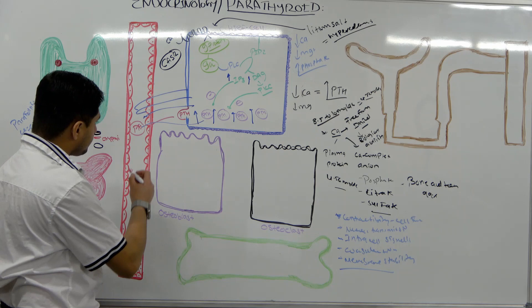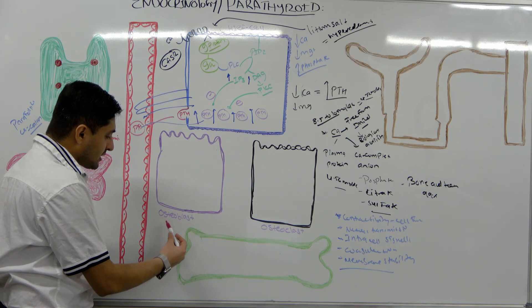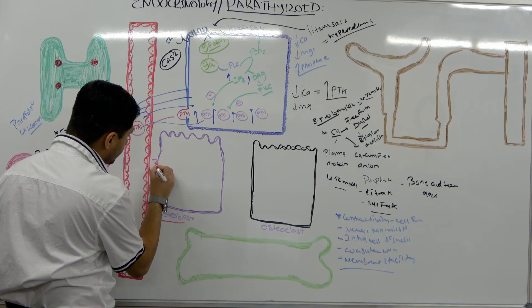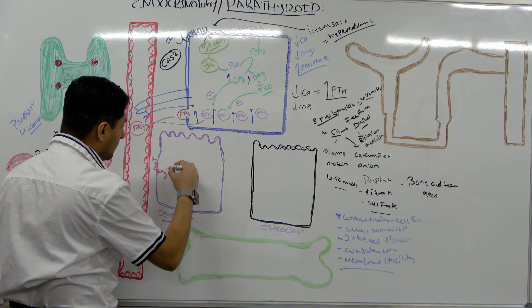When PTH goes to the bone cells, it acts on receptors located on the osteoblast cells. Remember, osteoblasts are known as your bone-building cells. There are different types of receptors — like PTH-1 and PTH-2 receptors. When PTH binds, it acts through 7-pass transmembrane receptors.